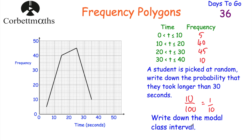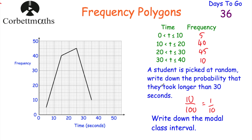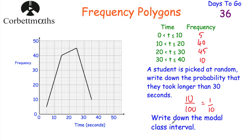The next question says: write down the modal class interval. The modal class interval is the most common one — the class interval that happens the most. In terms of our graph, we find it by looking for the highest point. The highest point here shows us the modal class interval is between 20 and 30 seconds. Alternatively, looking at the table, the one with the highest frequency is that class interval — time greater than 20 seconds but less than or equal to 30 seconds.